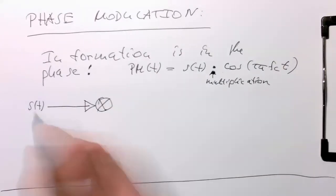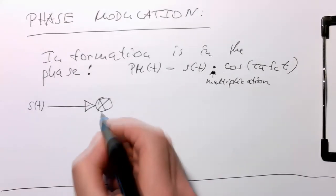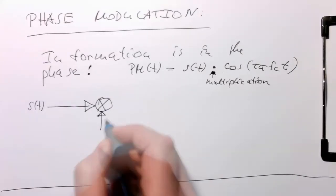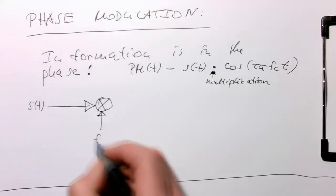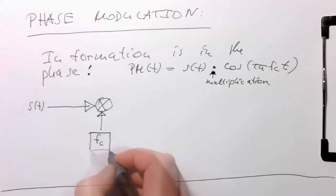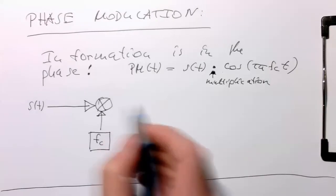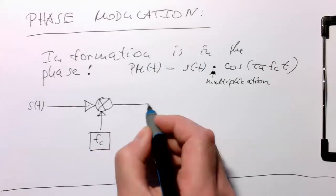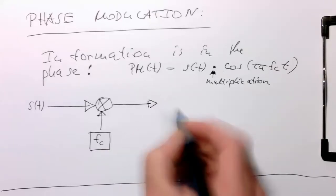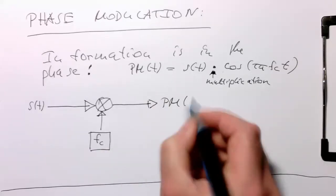So we just take our symbol stream S of t, our baseband, and we just multiply this by our carrier frequency fc, here this one, and then the output is our phase modulated signal, PM of t.